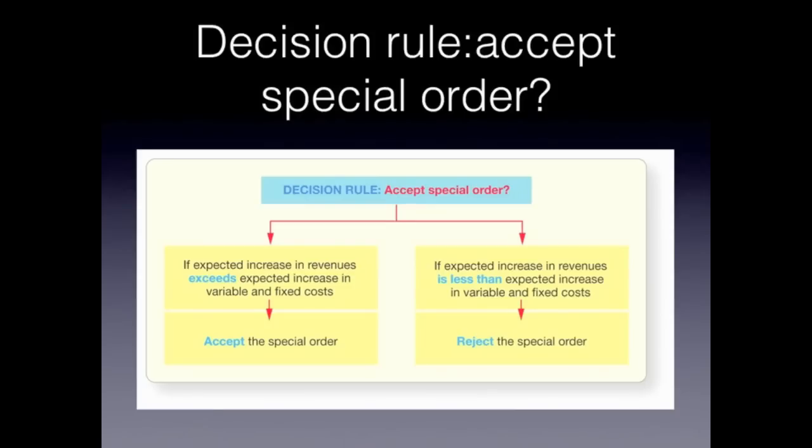So let's look at the decision rule — should we accept or reject a special order? If your expected revenues exceed your expected increase in variable and fixed cost, then you should accept the special order. If your expected increase in revenues is less than your expected increase in variable and fixed cost, you should reject the special order.